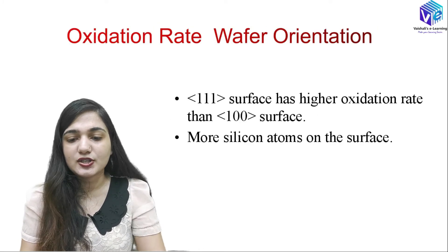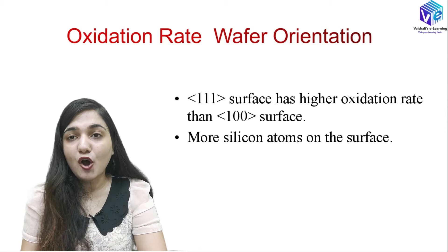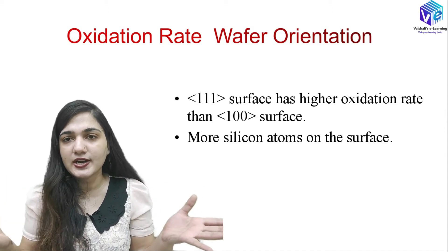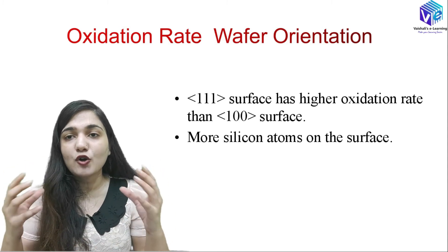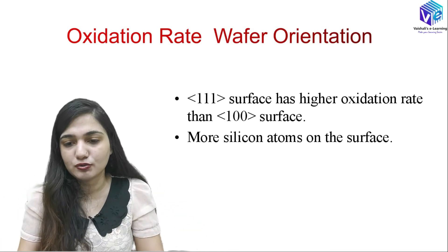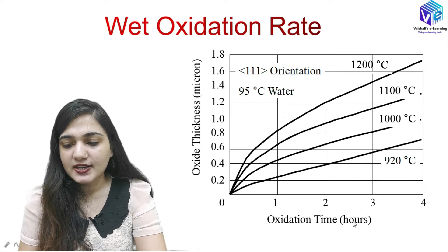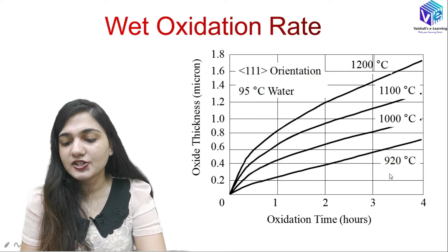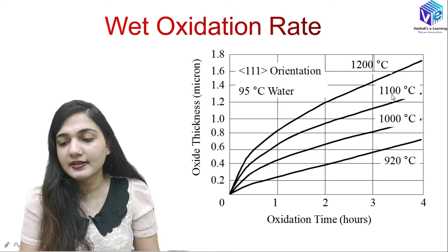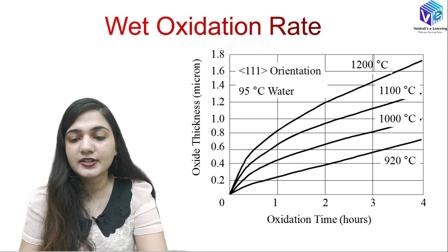Regarding wafer orientation, the (111) surface has a higher oxidation rate than (100) orientation because more silicon atoms are present on the (111) surface — it is a more compactly arranged orientation. More silicon atoms means more SiO2 formation. You can see from the wet oxidation graph that at 920°C oxide thickness is lower, and it increases progressively at 1000°C, 1100°C, and 1200°C — all for the (111) orientation.